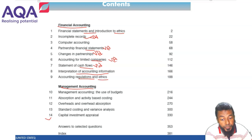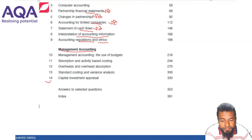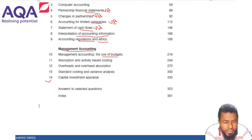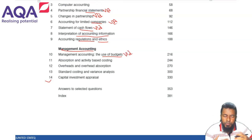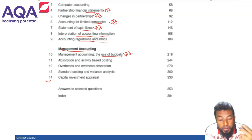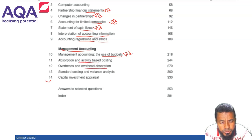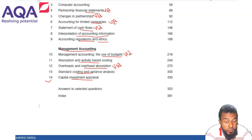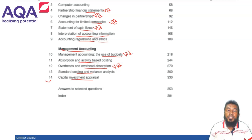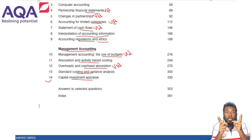Accounting regulations is a theory chapter on ethics — I'm going to make videos on those soon. Management accounting: budgets — I have a big video but budgeting is a really big part so that one video doesn't cover the whole chapter, and I'll make more. Absorption costing and activity-based costing — I'll make videos on those. Over- and under-absorption — I have a super video on that. Variance analysis — not yet. Capital investment including NPV, IRR, and payback — I'm going to make videos on these.